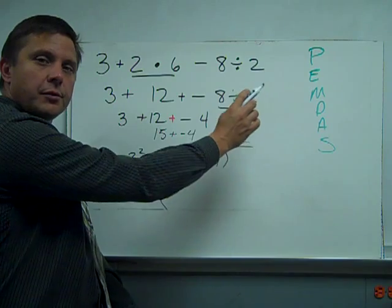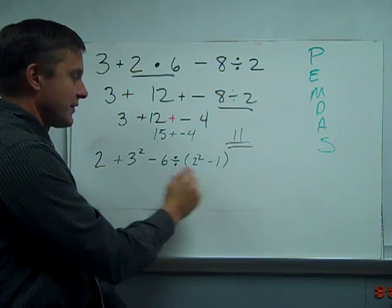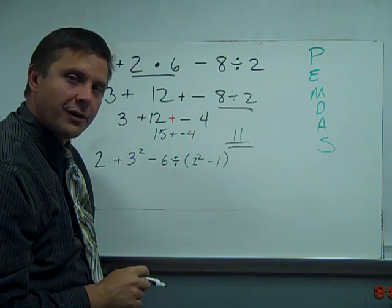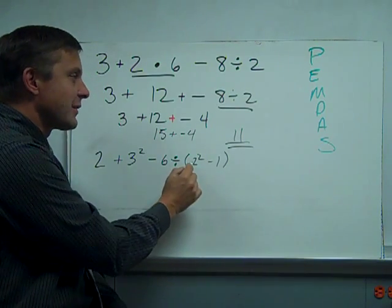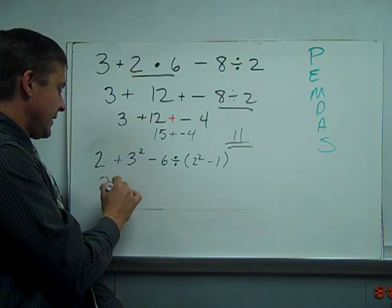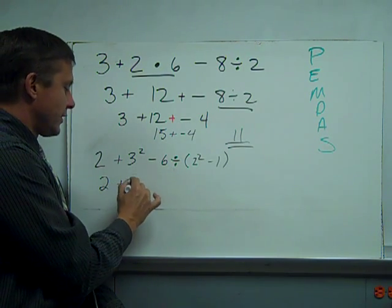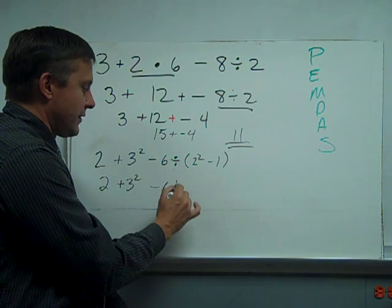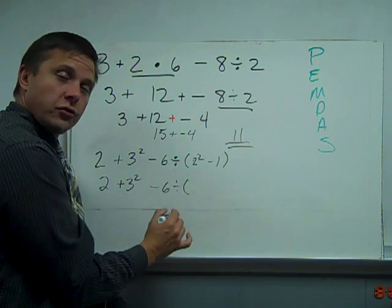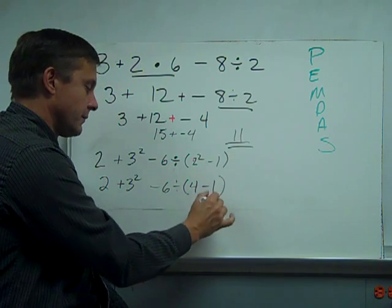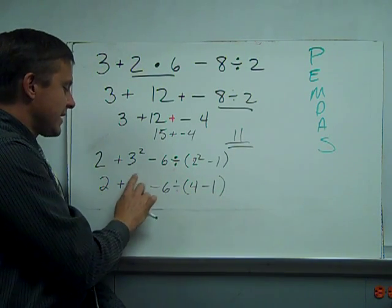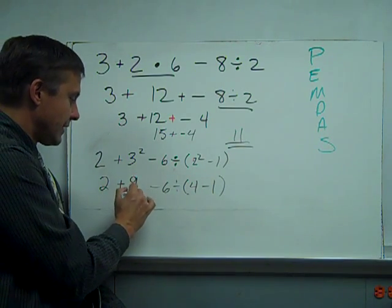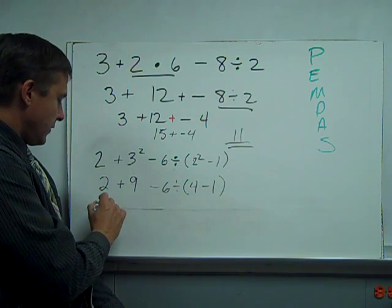On the next problem, first thing, please excuse my dear Aunt Sally. Search for parenthesis. I have some right here. Now I go inside the parenthesis, and I look for more parenthesis. There aren't any. Then I see that there is an exponent in a couple spots actually, but we'll get there first on the parenthesis. And I'll do that here. 2 squared is 4. 2 times 2. And actually at the same time over here, I can do exponents outside here. 3 times 3 is 9.